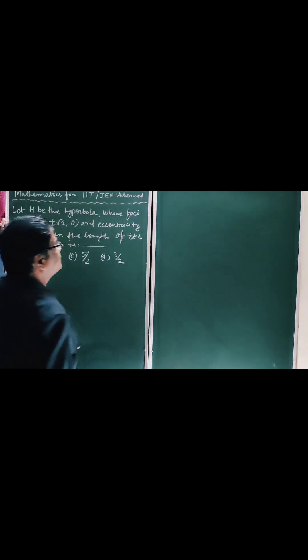The question is: let H be the hyperbola whose foci are (1 ± √2, 0) and eccentricity is √2. Then the length of its latus rectum is—choices are given and we have to find the correct answer.